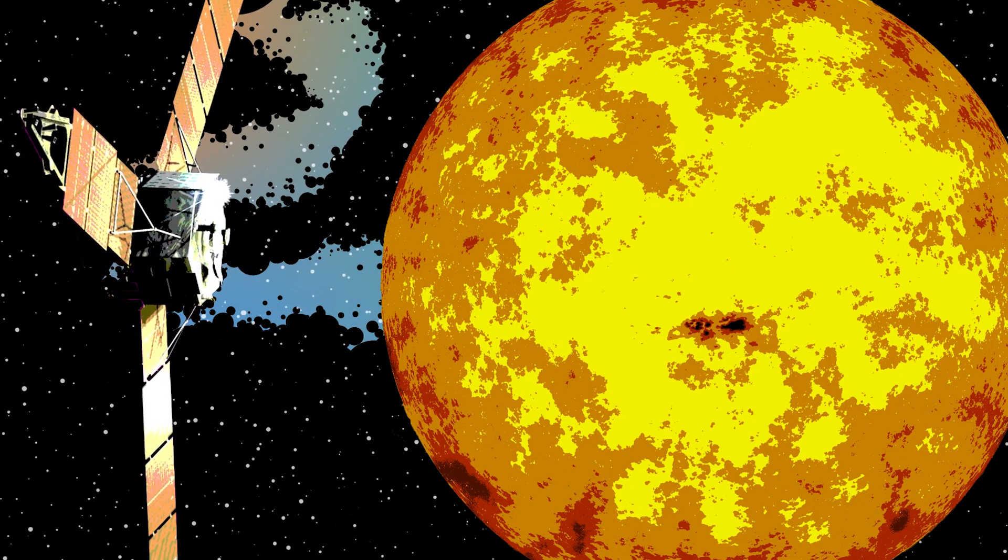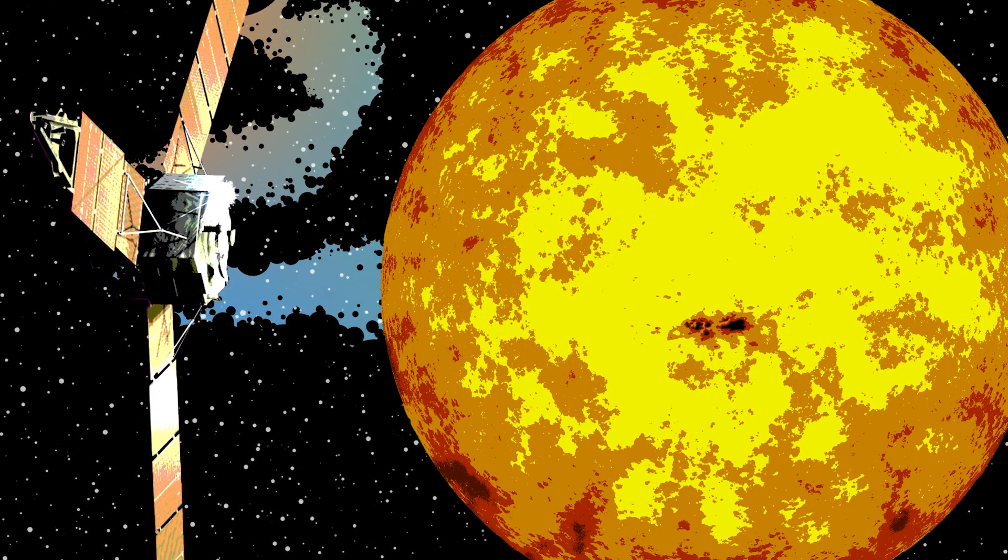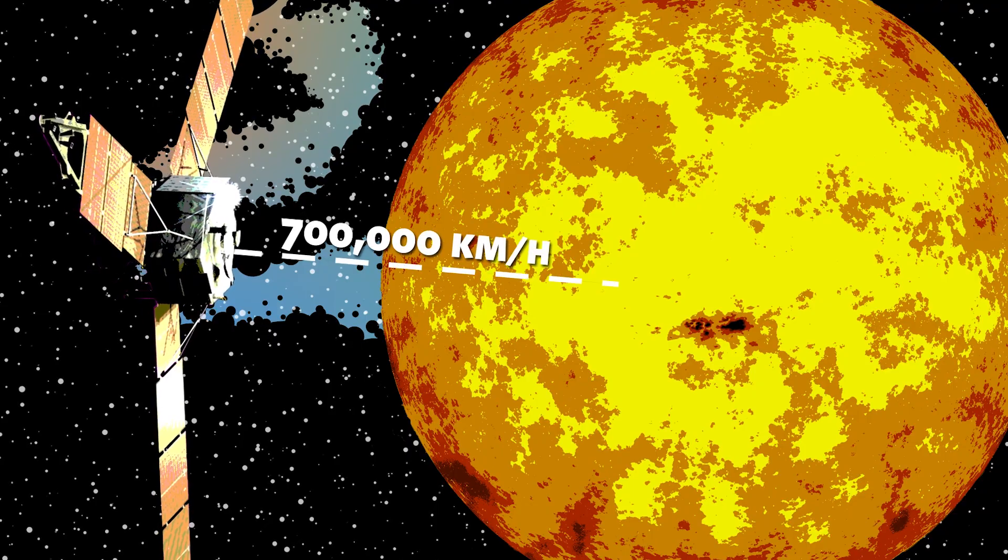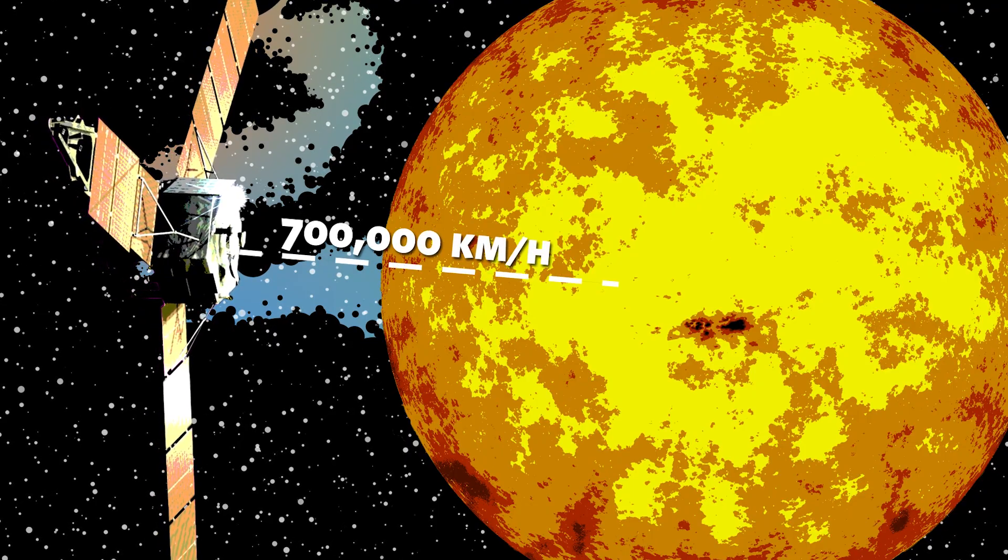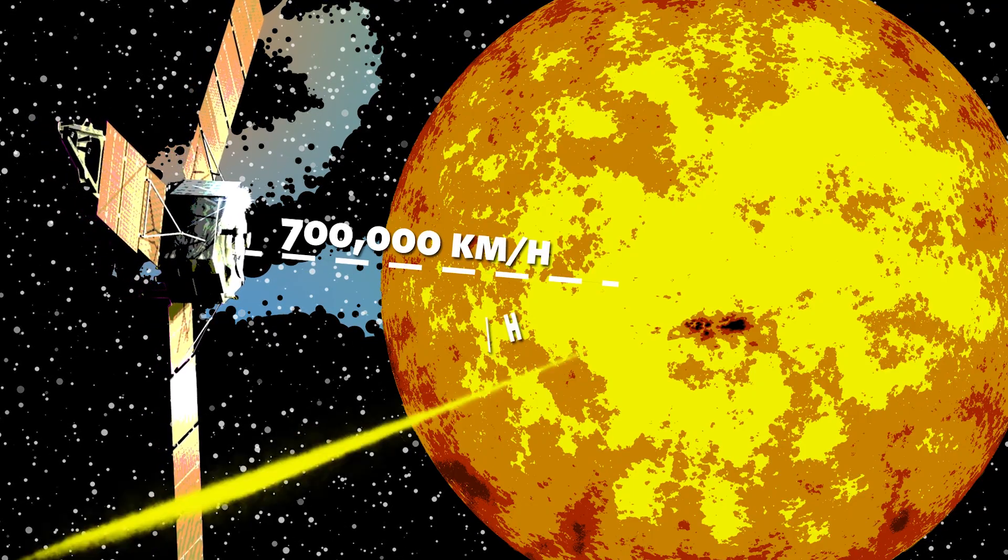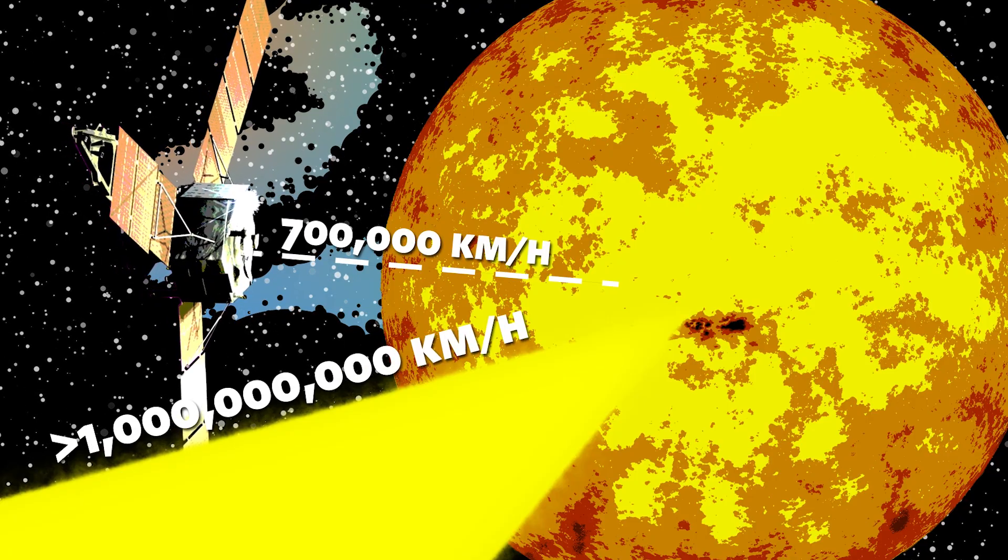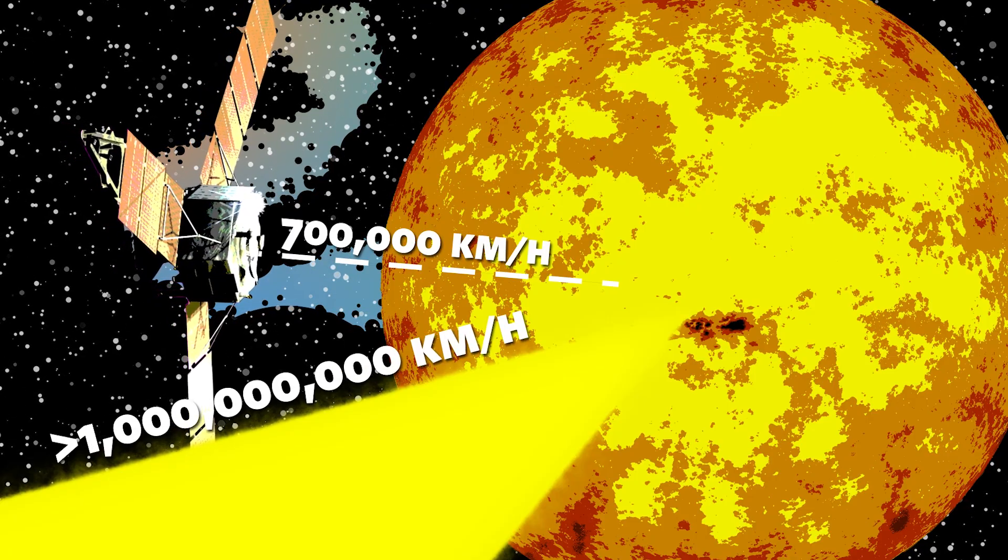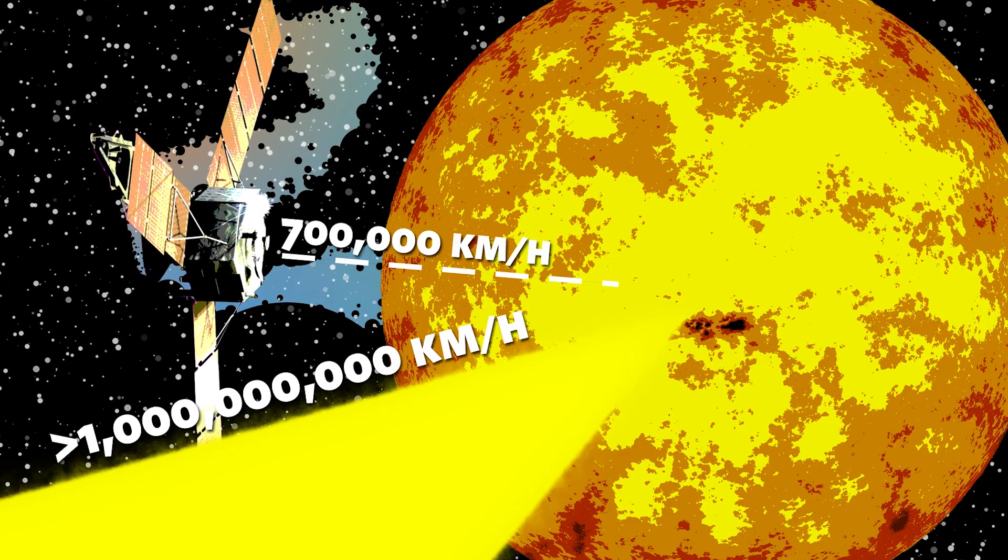The fastest man-made object in existence, a probe being sent to study the sun, will travel at over 700,000 kilometers an hour. That may sound fast, but light goes at over a billion kilometers an hour. So our probe is only traveling at a small fraction of 1% the speed of light.